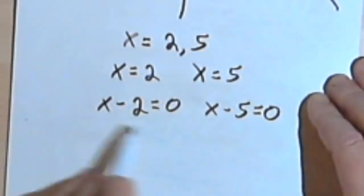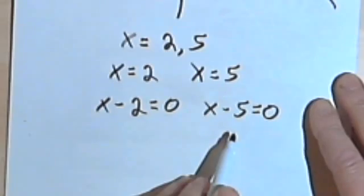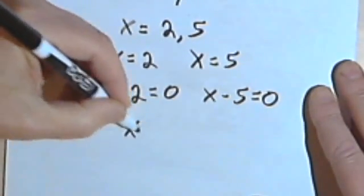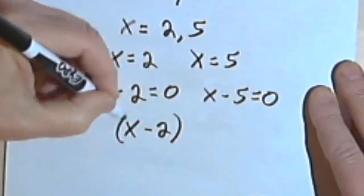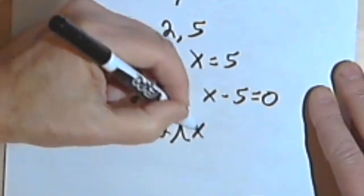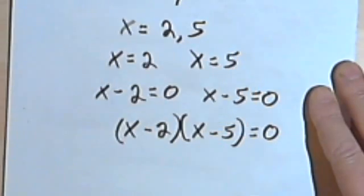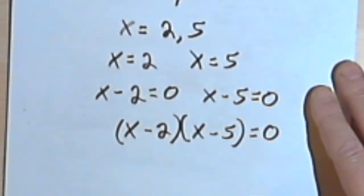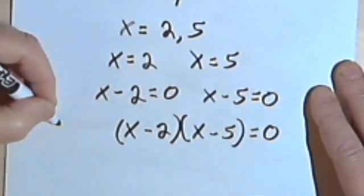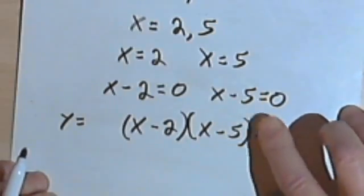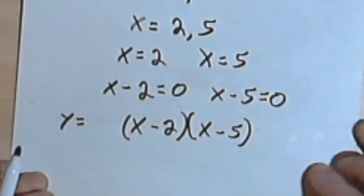And since both of the equations are equal to zero, I'm just going to multiply them together. So I've got x minus 2 times x minus 5 equals zero. And now I'm just going to change its form to y equals x minus 2 times x minus 5.